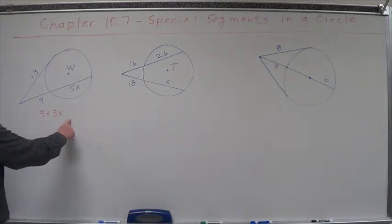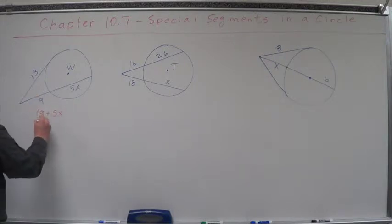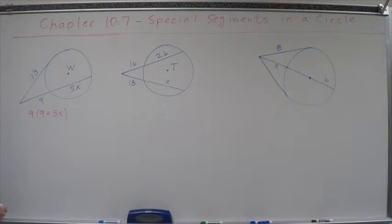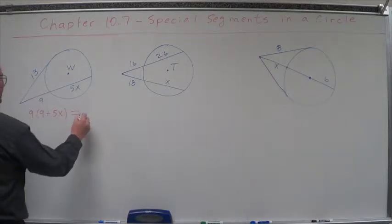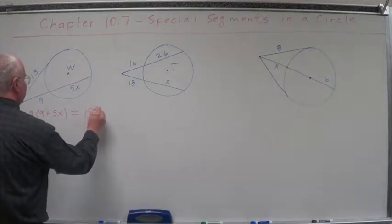This whole thing here is 9 plus 5x, isn't it? So we want 9 plus 5x, and we're going to multiply it times its external portion. So that's going to be 9. And then that's going to equal the square of this thing here. So that would be 13 squared.